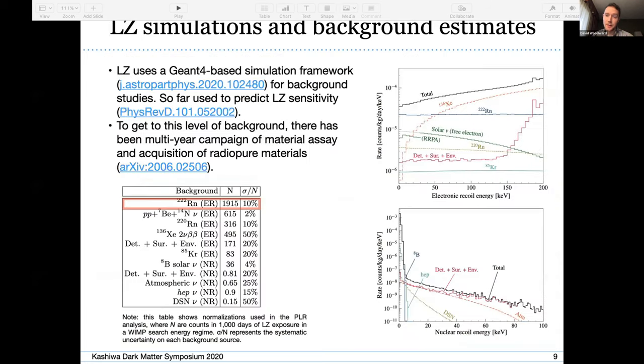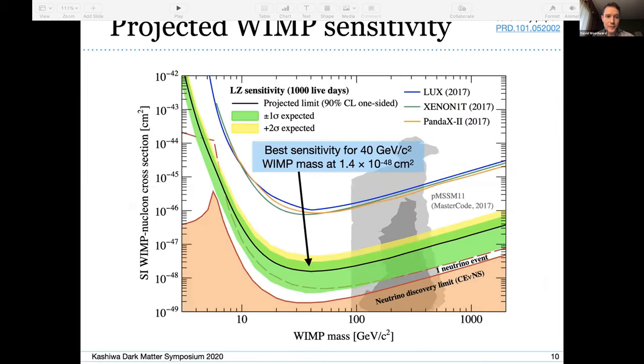At the same time as the hardware integration, we're also doing simulations and sensitivity studies and background estimates. I'm running out of time, so I'm just going to basically highlight the key points, which is that for electron recoil backgrounds we're limited by radon-222 specifically, and for nuclear recoil backgrounds we're basically sensitive to neutrinos from the sun, and that's basically equivalent to our backgrounds from the detector and the environment.